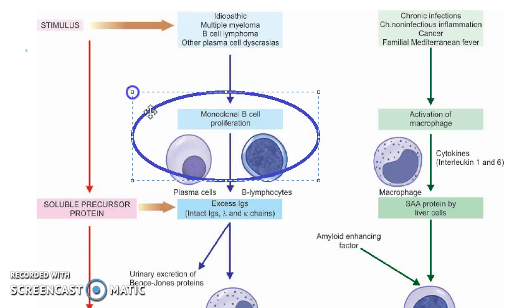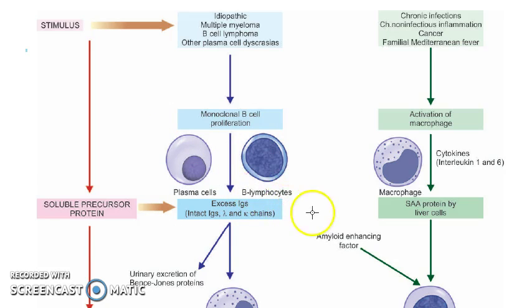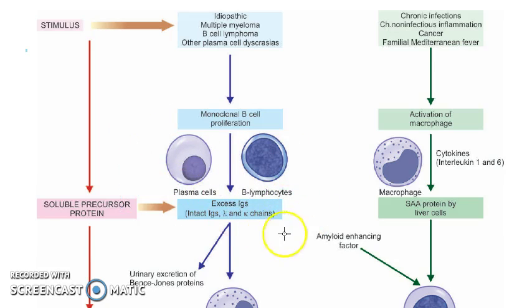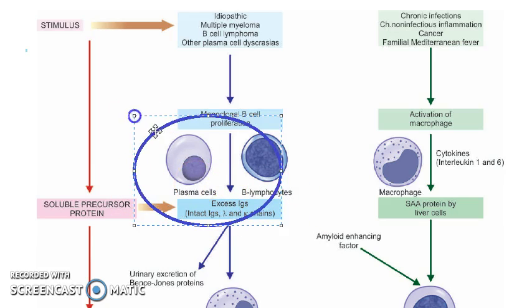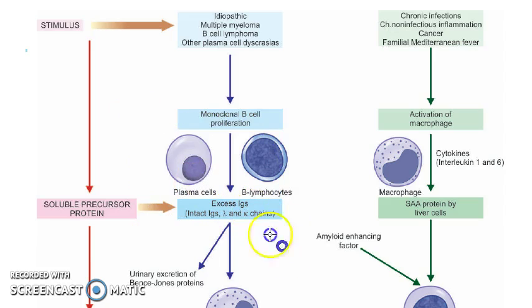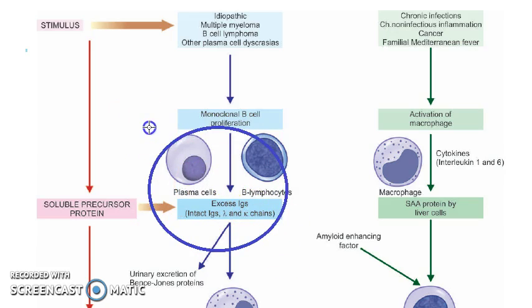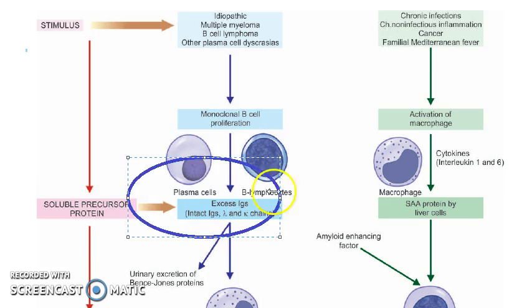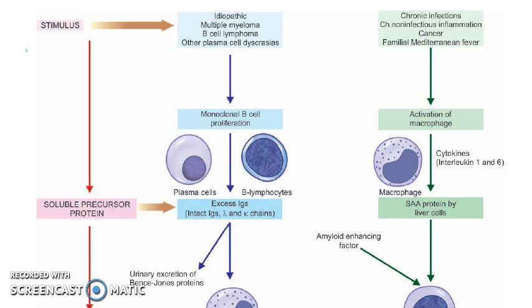So the B cells — monoclonal B cell proliferation — the plasma cells and the B lymphocytes, they are going to produce these; the lymphocytes themselves become plasma cells. So the plasma cells produce excess immunoglobulins. Basically the light chains will be more — the lambda and the kappa chains.